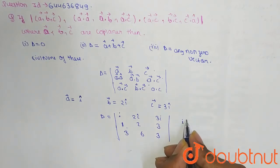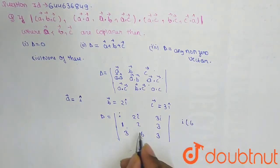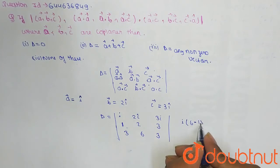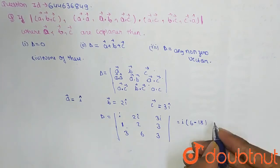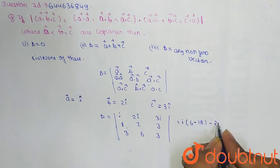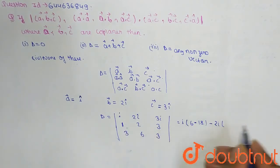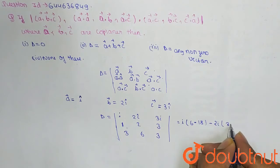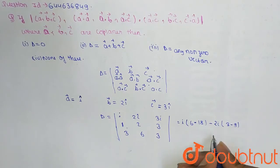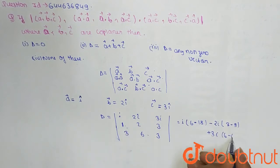So 1 through 3 is 6, 6 minus 18, minus 2I times (3 minus 9), and this will be plus 3I, 6 minus 6.